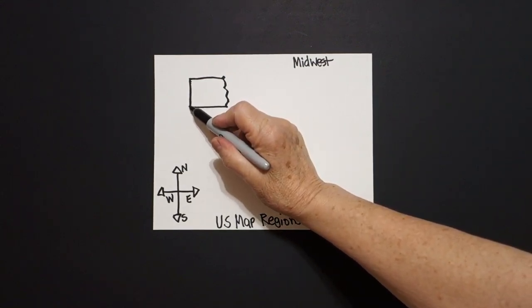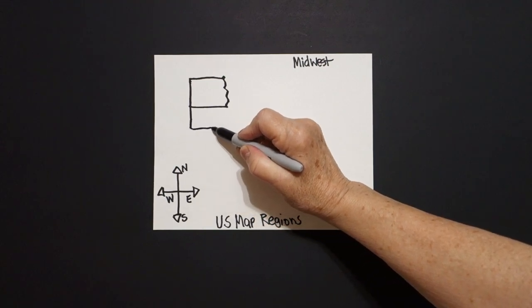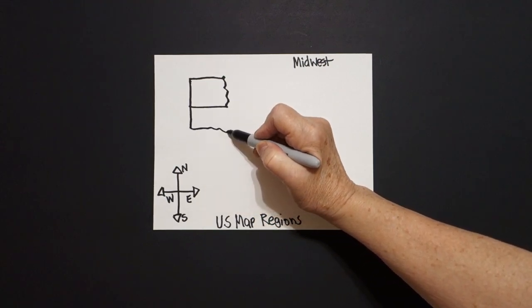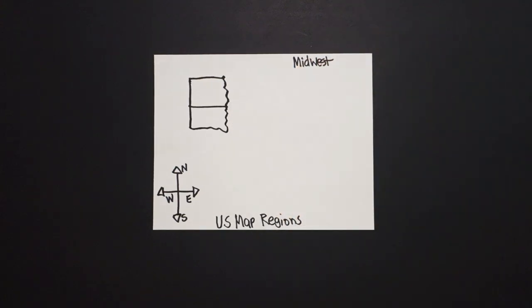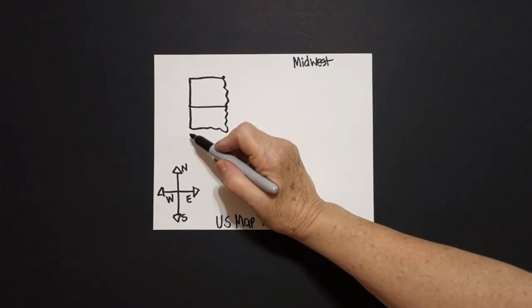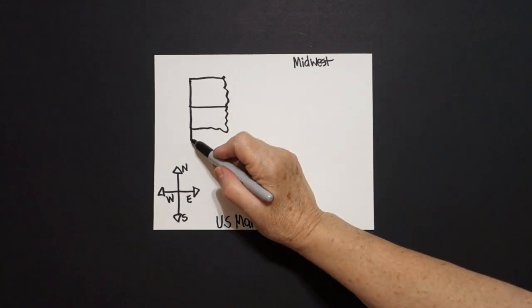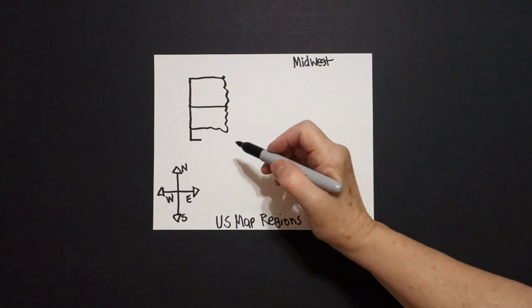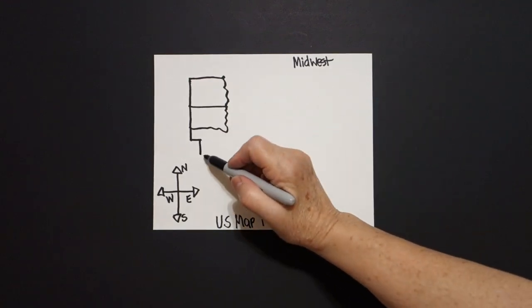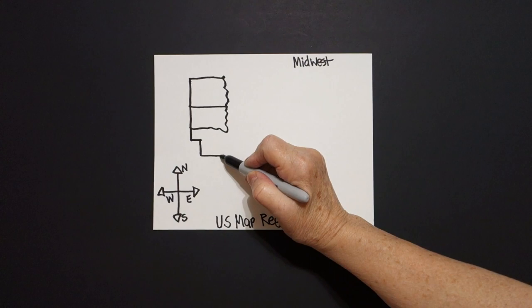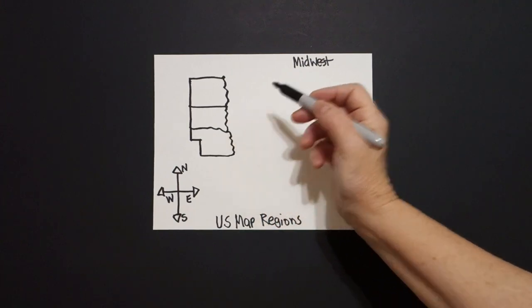We're going to draw a straight line down, straight line over, wavy line down, wavy line up, and connect. Come right down below that. We're just going to draw a little straight line down, straight line in, straight line down, straight line over, and a wavy line up, and connect.